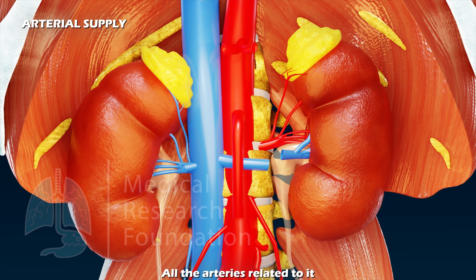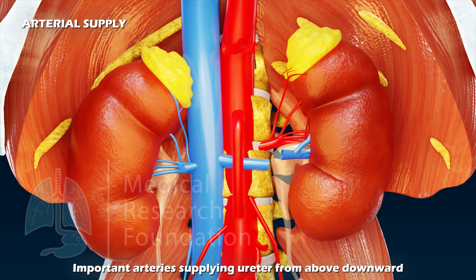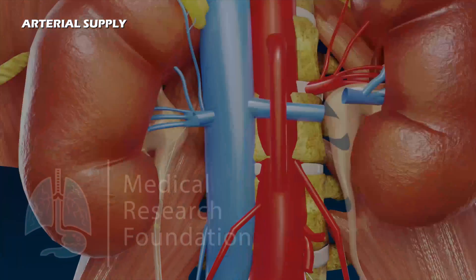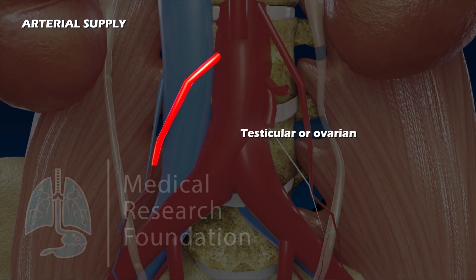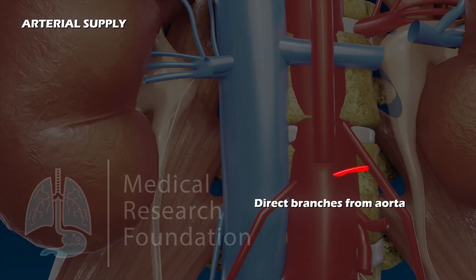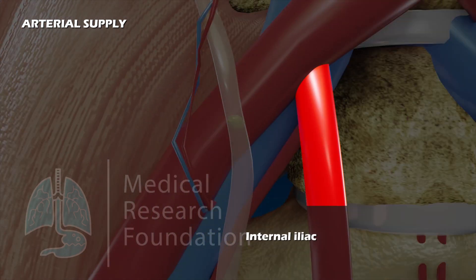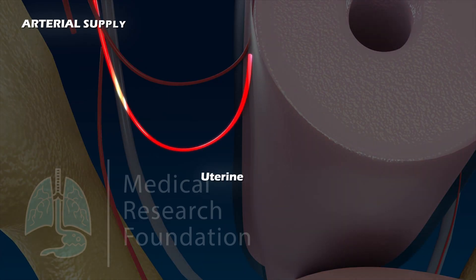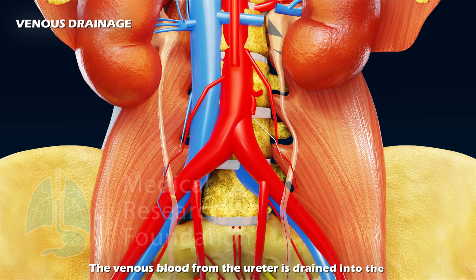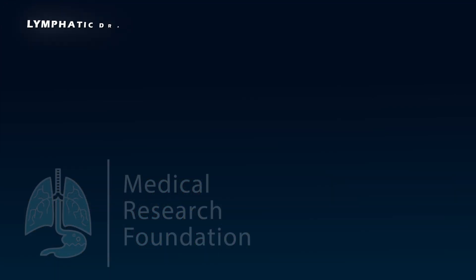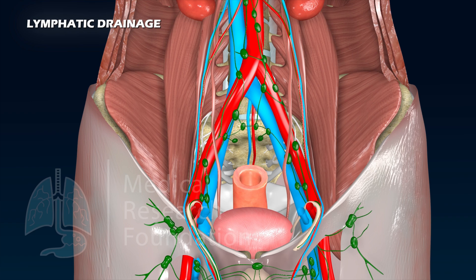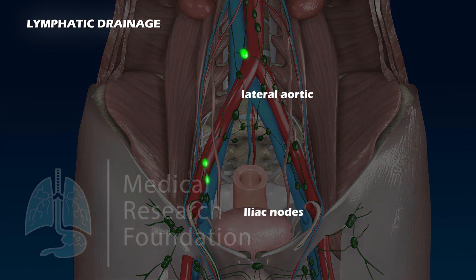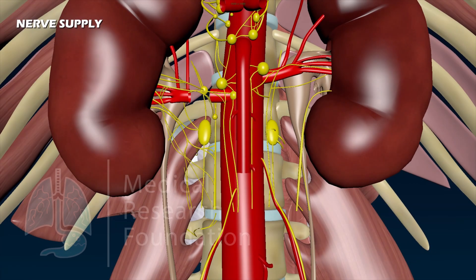The ureter derives its arterial supply from branches of all the arteries related to it. The important arteries supplying the ureter from above downward are: renal, testicular or ovarian, direct branches from the aorta, internal iliac, vesical (superior and inferior), middle rectal, and uterine. Venous blood from the ureter is drained into the veins corresponding to the arteries. Lymphatic drainage is into the lateral aortic and iliac nodes.